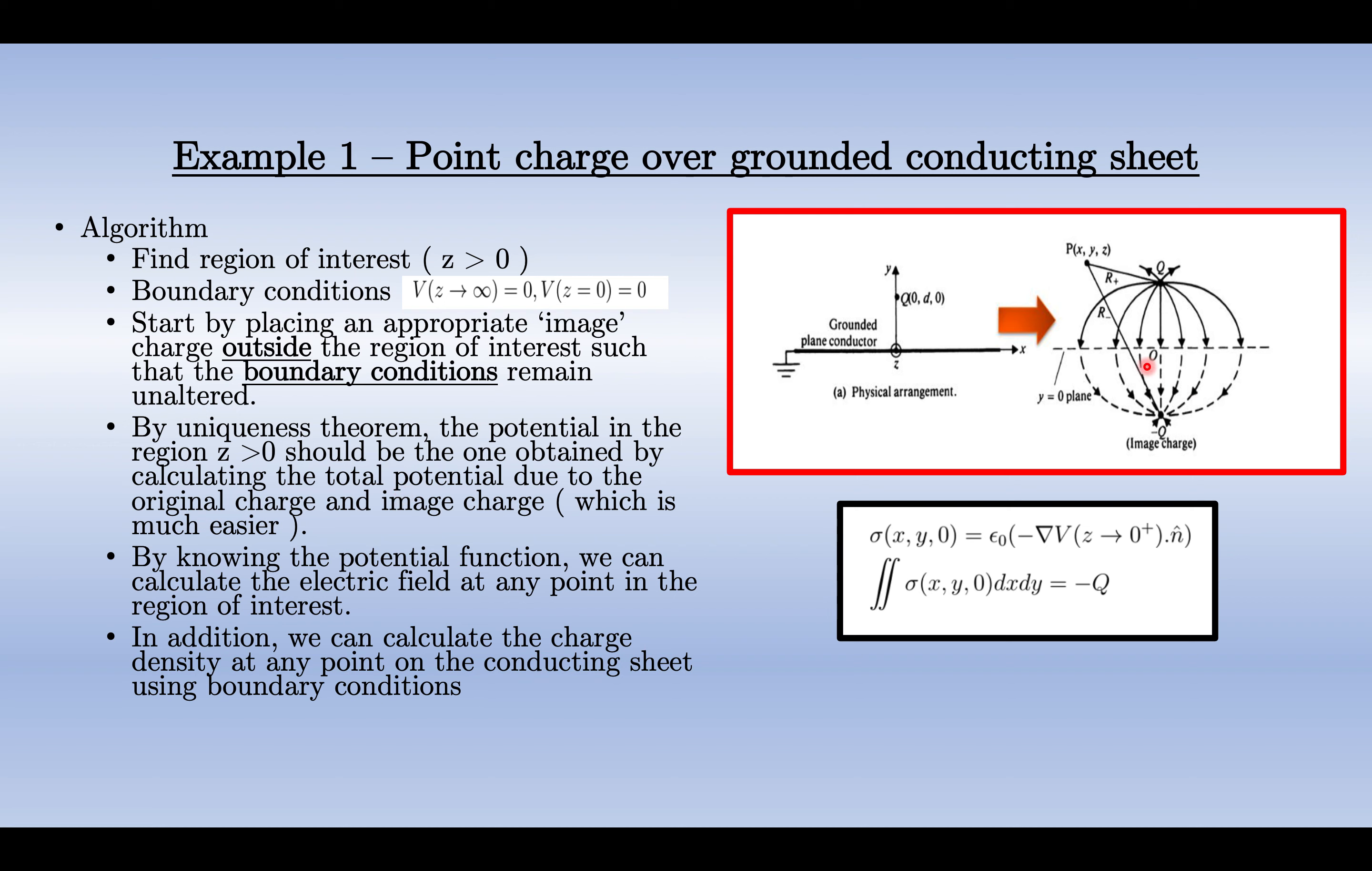So we can actually calculate the potential due to these two charges, +q and -q, at any point much easier because we know the formula for them easily from the previous lectures. In this way we can actually calculate the potential and the electric field at any point with z > 0, but we can't say anything about z < 0 because we are altering the thing.